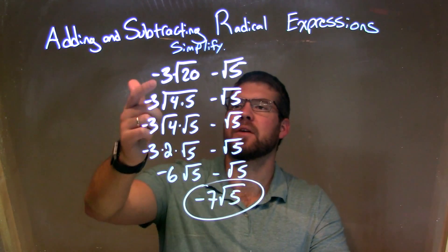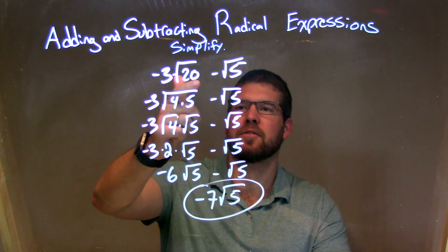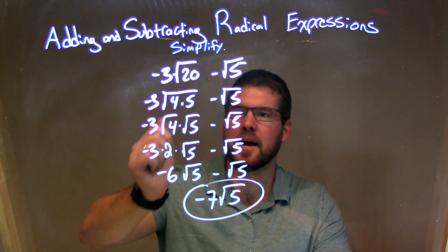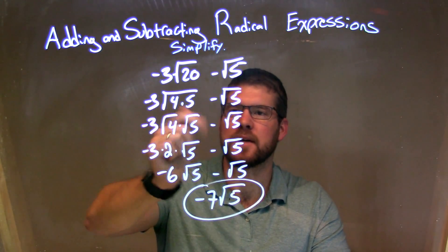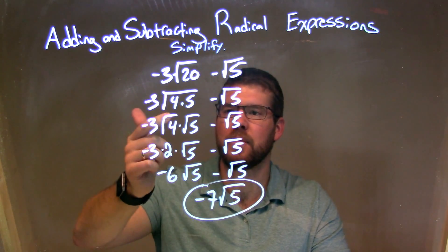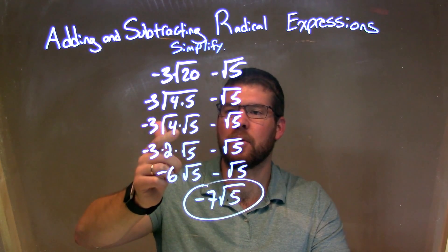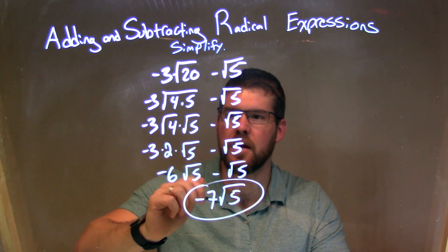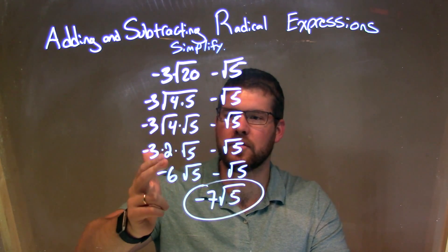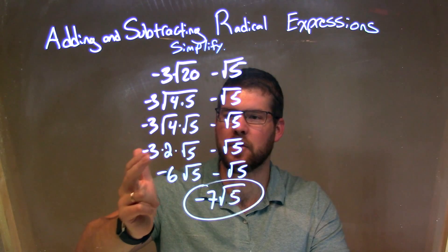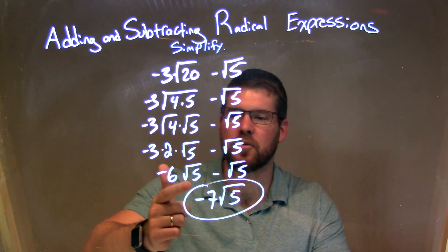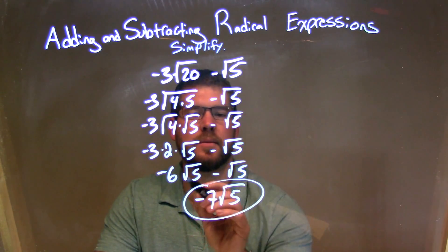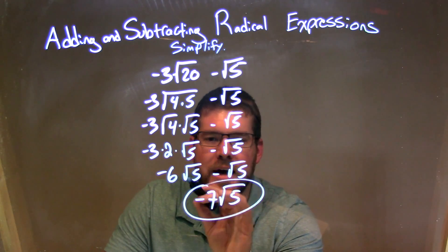So let's recap. We're given negative 3 times the square root of 20, minus the square root of 5. 20 I can break down to be 4 times 5. Then from there, I can break that apart to the square root of 4 times the square root of 5. Well, square root of 4 is just 2, and negative 3 times 2 is negative 6. That square root of 5 is right here.